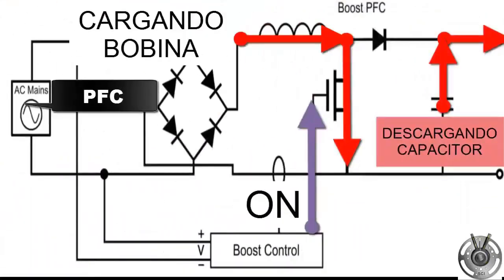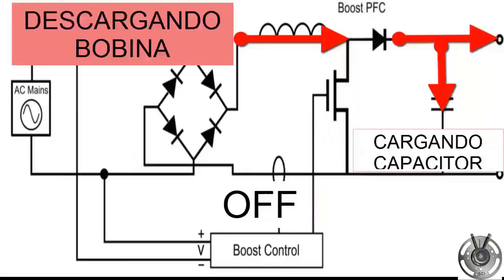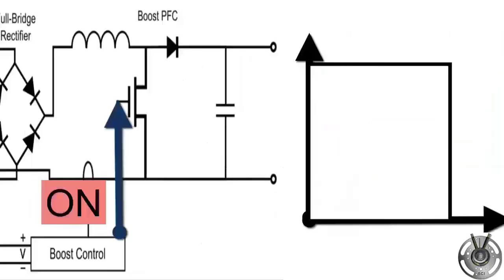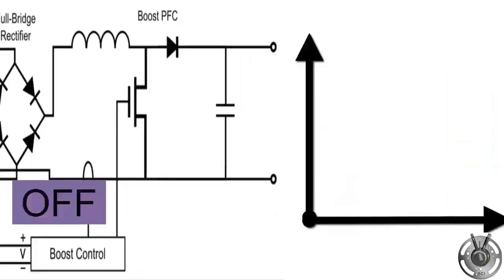The reactor stores energy in its magnetic field when the current flows through it, that is, when the IGBT transistor is on. The electronic controller, through control strategies, determines when the energy accumulated in the reactor is sufficient to replace the energy that is entering. At that moment, the controller deactivates the IGBT and suspends the current supply.